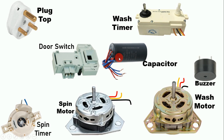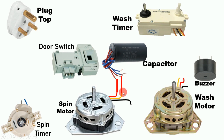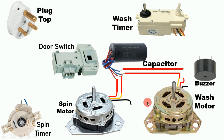The capacitor with lower capacitance value needs to be connected with the starting and running winding. Connect one wire of the capacitor to the running winding and the second wire to the starting winding (yellow wire). For the wash motor, connect the capacitor with higher capacitance (blue wire) with the starting and running winding as well. This completes the motor-to-capacitor connection.